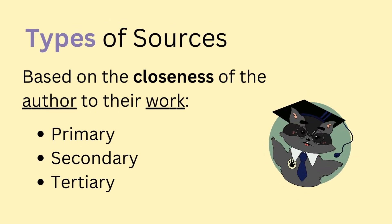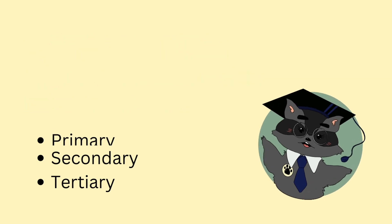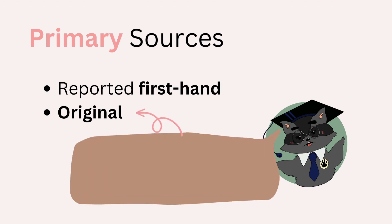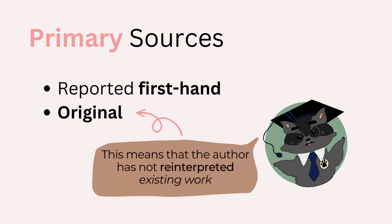Now that we have a basic understanding of what a source is, we can look at the primary categorizations of it. Most commonly, sources are divided into three types: primary, secondary and tertiary. This is based on the closeness of the author to their work. Let us first look at primary sources. Primary sources are first-hand reports. They are original in the sense that they are not based on other works and contain a reinterpretation of that work by the author.